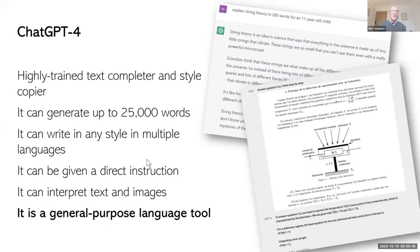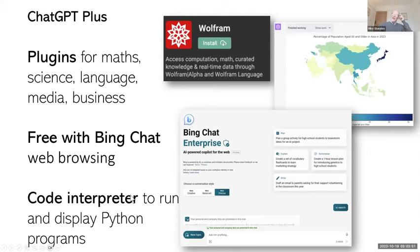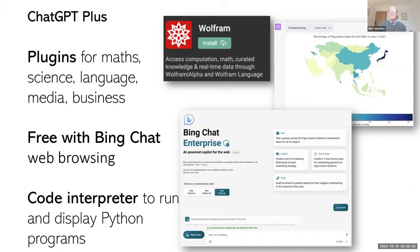It's a general purpose language tool. Extensions to ChatGPT take it even further — there are plugins for maths, science, language, media, business. It's now free with Bing Chat, the Microsoft Bing browser, which provides web browsing meaning it can access up-to-date information and provide links to websites to justify its responses. It also has a code interpreter to run and display Python programs, which means you can give it a large database and it will visualize, interpret, and explain the data visually. So it's enormously powerful.